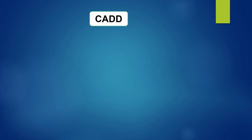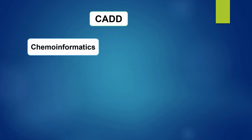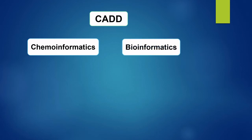Computer-aided drug design can be classified into chemoinformatics and bioinformatics. There are a number of classifications proposed by different authors and books — such as computational chemistry and medicinal chemistry — but for now we will assume that CADD is divided into chemoinformatics and bioinformatics so that it is easy to learn and understand this concept.